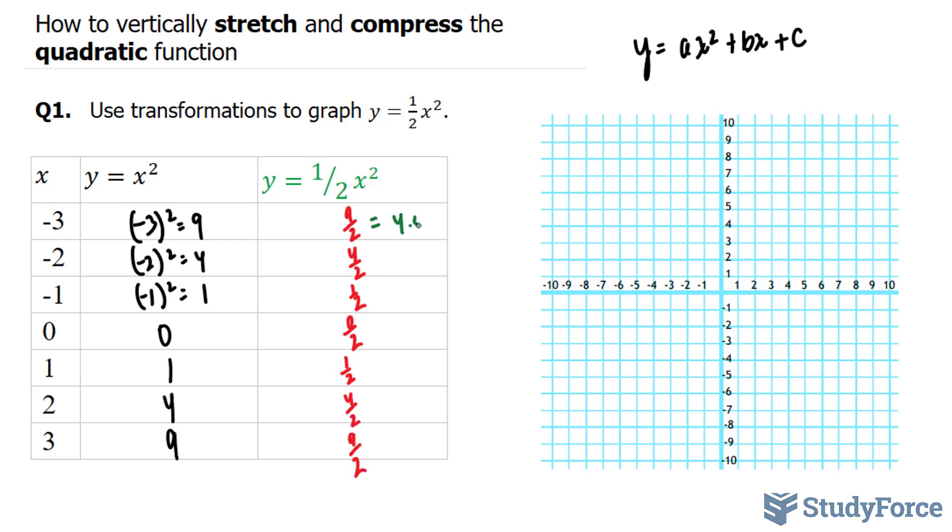This gives us 4.5, 2, half, 0, and the same thing, but in the opposite order for the rest.